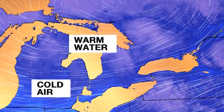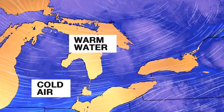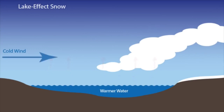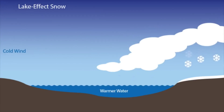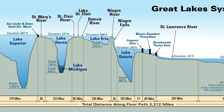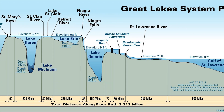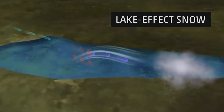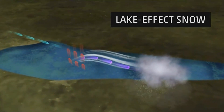Lake effect snow is formed by the cold air from Canada moving across the warm waters of the Great Lakes. When that colder air meets the warmer air from the water, it forms a cloud. These clouds form narrow bands that can produce snowfall rates up to three inches per hour. Due to the size and depths of the lakes, the air over them remains warm for long periods of time, causing prolonged lake effect snowfalls.